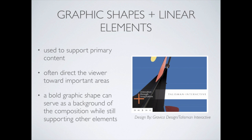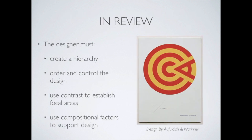Graphic shapes and linear elements — things like plus signs or lines — are designed to direct you toward the active areas of the page, much like a margin. The problem is that people often put too many of them on a page and it becomes very cluttered. It works nicely if you have one line or one subtle element to help direct your page; too many and you'll run into problems. In review: you as the designer need to create a hierarchy — that's huge. You need to order and control that design, ideally using some kind of contrast to establish a focal area, and then use your compositional factors to support that design.